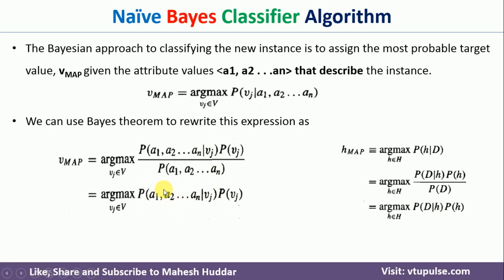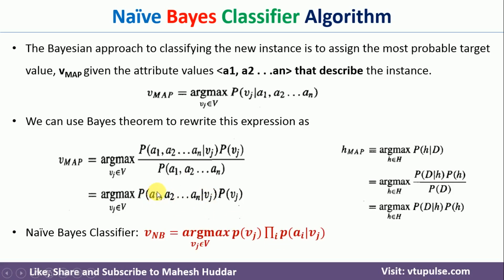Looking at this equation, probability of Vj can be written as-is. The term probability of a1 to an given Vj can be decomposed — under the Naive Bayes assumption of conditional independence — as: probability of a1 given Vj multiplied by probability of a2 given Vj, and so on. This is written as the product of probability of ai given Vj for all values of i. This is the final VMAP, also called VNB — the Naive Bayes classifier. We use this equation to calculate the posterior probabilities for each hypothesis, and the one giving the maximum value is the solution.